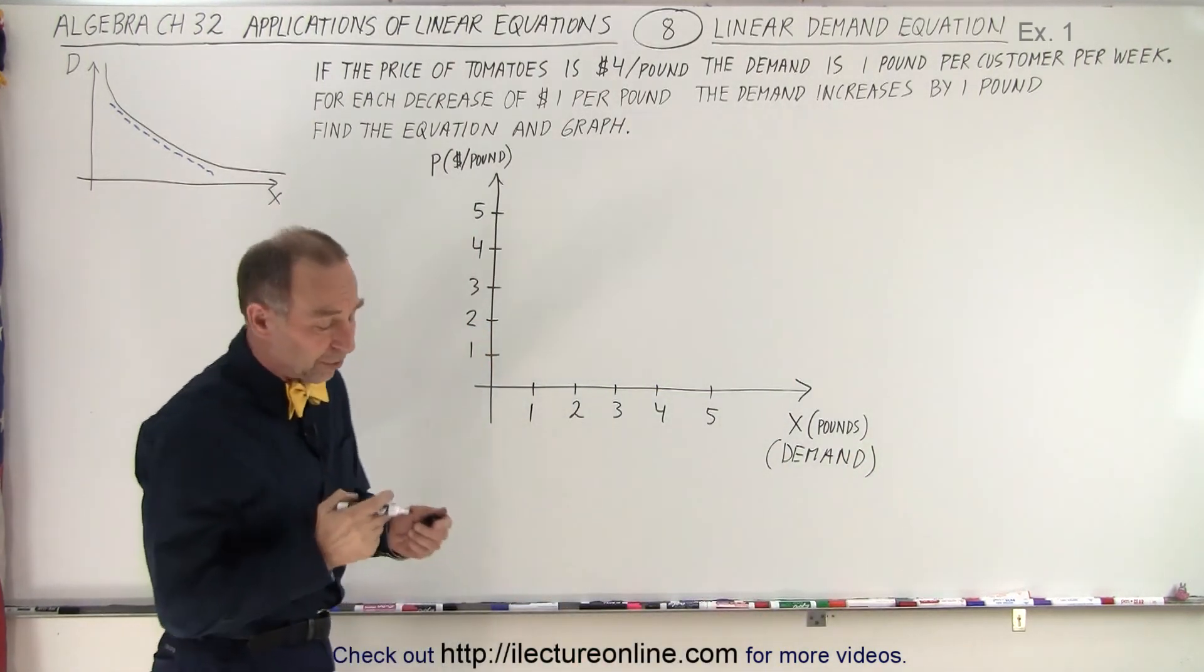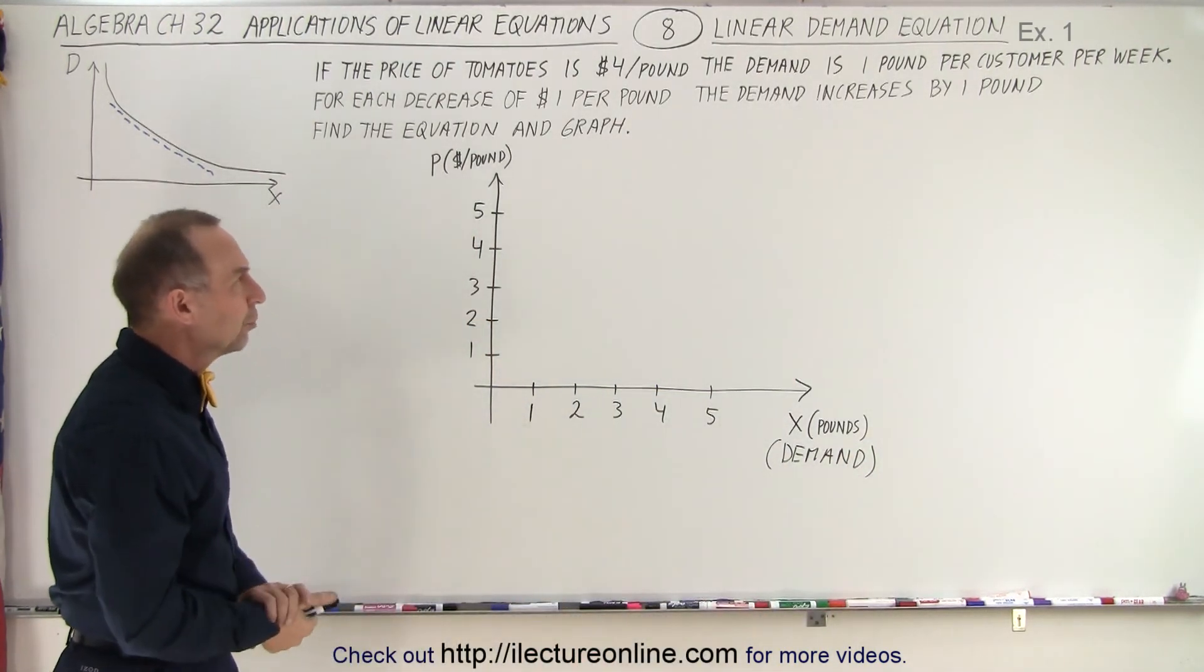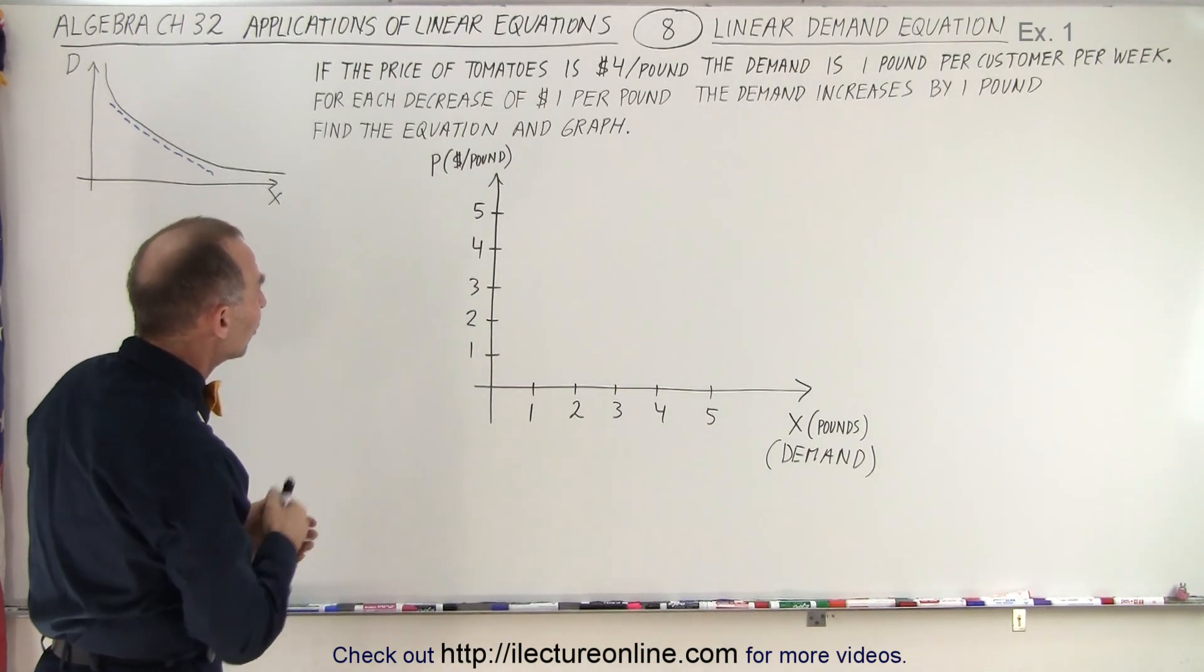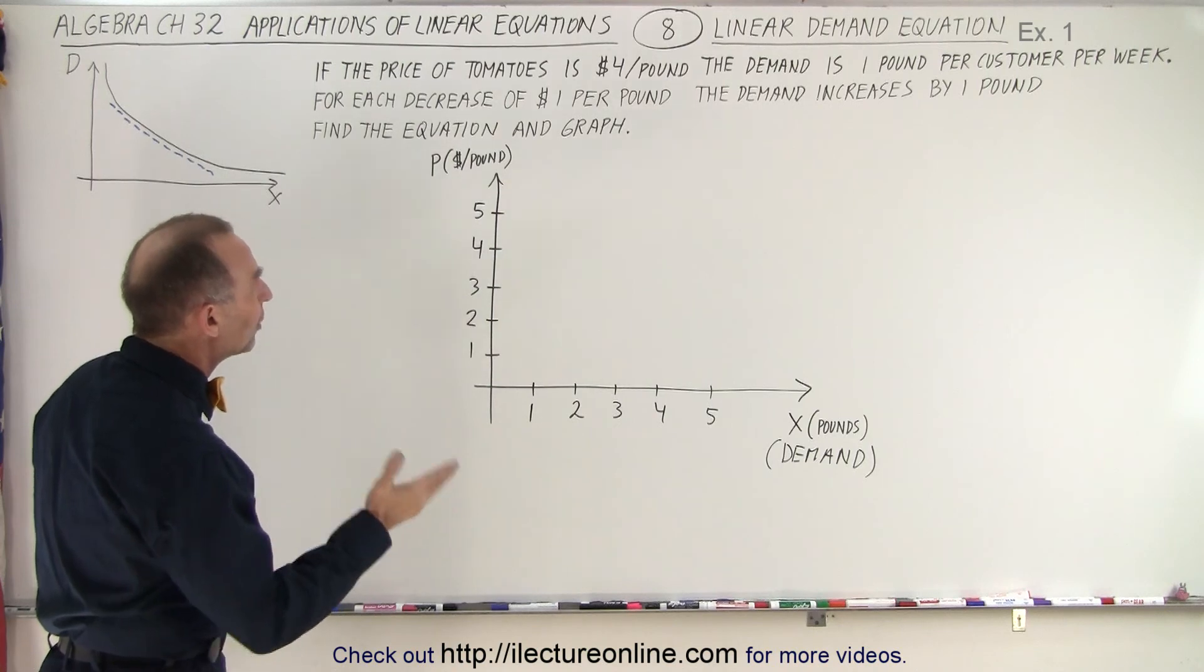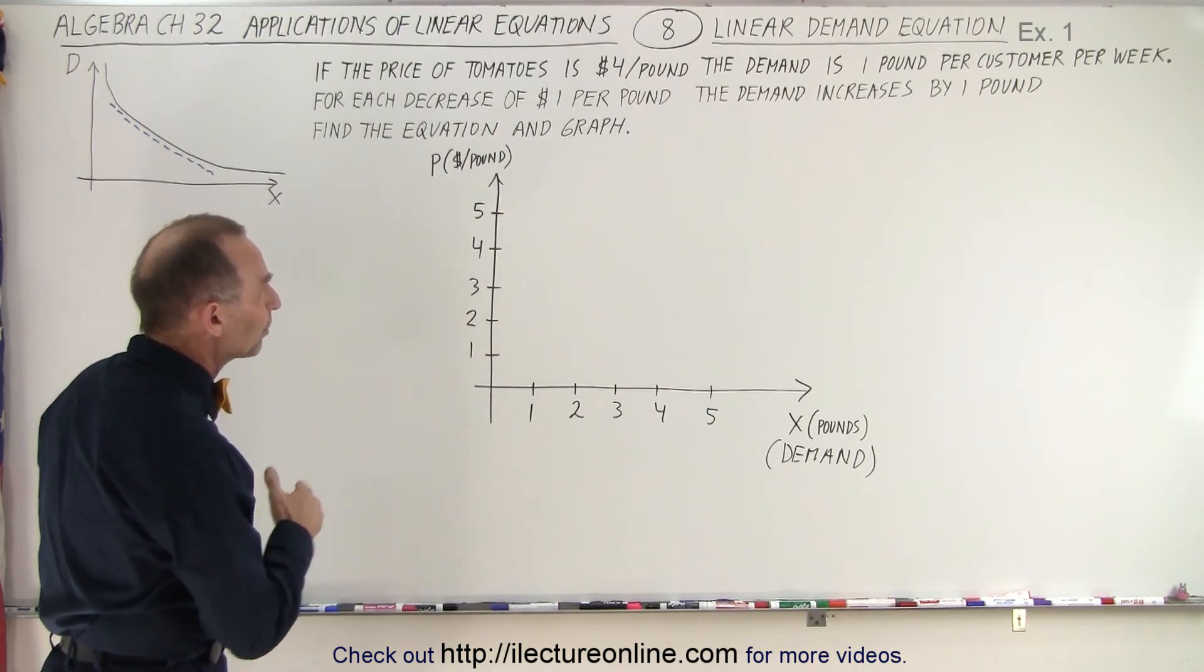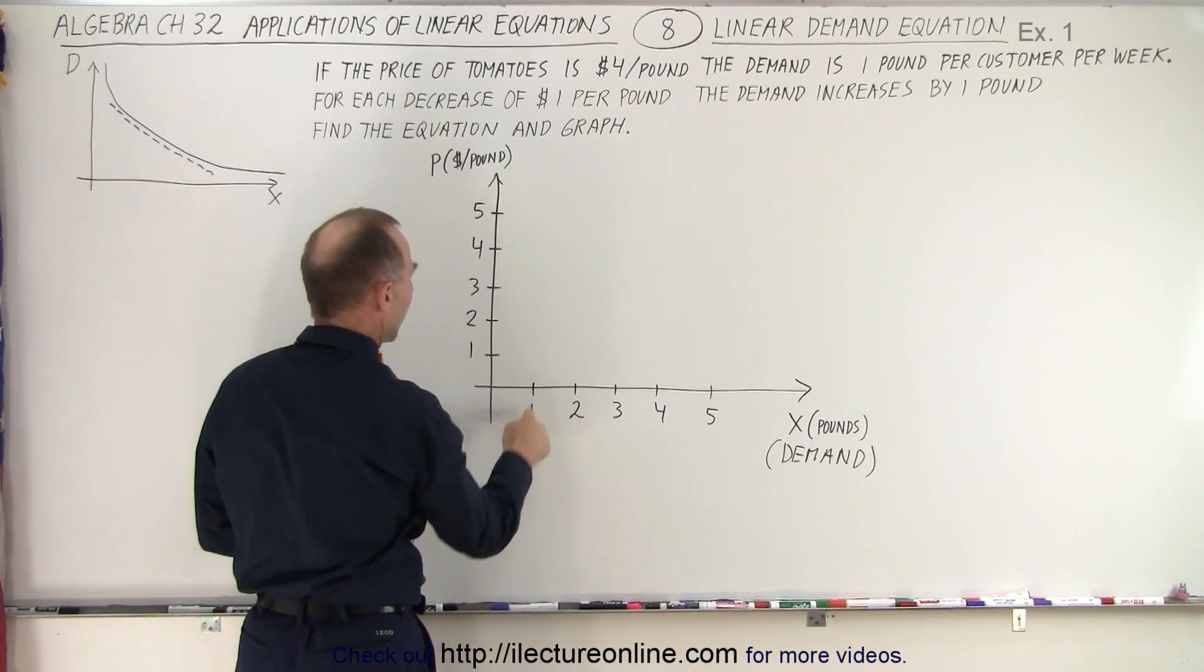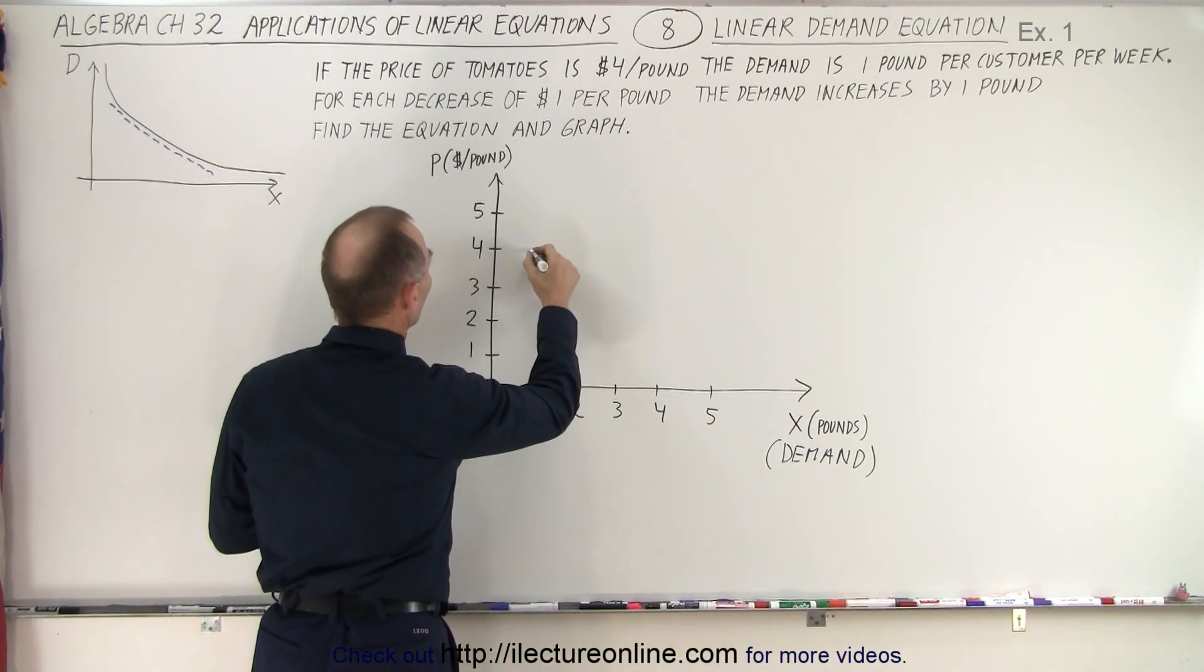But you'll see that they'll try to present it the other way around. So here in our problem we have the price of tomatoes is four dollars per pound and then the demand is one dollar per pound per customer per week. So let's plot another point. It's four dollars per pound, the demand is equal to one.